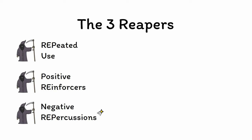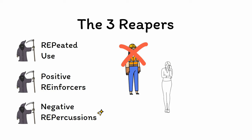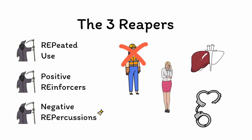Finally, we have negative repercussions. These consequences of use — such as losing a job, alienating family and friends, getting into legal trouble, or jeopardizing one's health — are a key part of the equation for addiction, and addiction cannot be diagnosed in their absence.